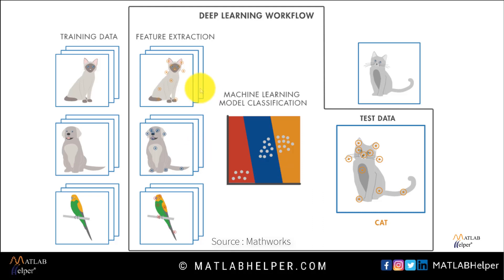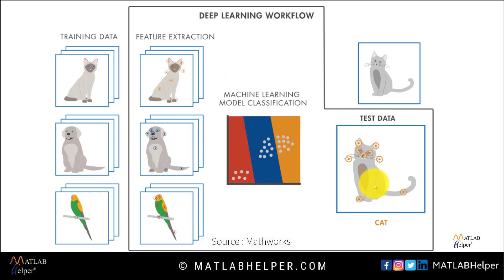There are certain features unique for cat, certain unique for dog, and certain unique for parrot. Now the testing data's features will be matched with the training data. For example, when a cat is given in testing data, its features will be matched with cat, dog, and parrot. In this case, it will mostly be matched to cat since its features will be similar. Hence, the outcome will be obtained as a cat, and this is how the testing happens.